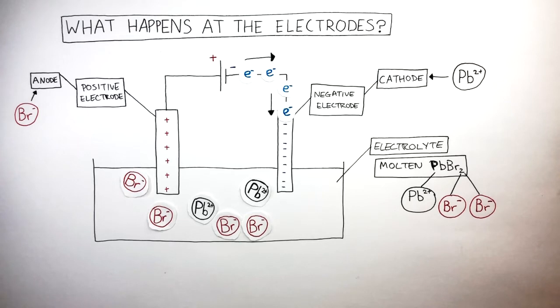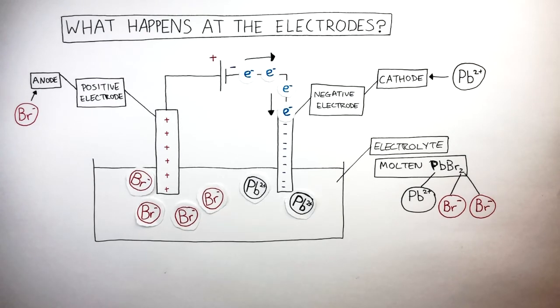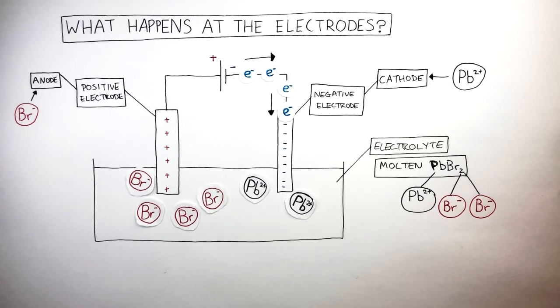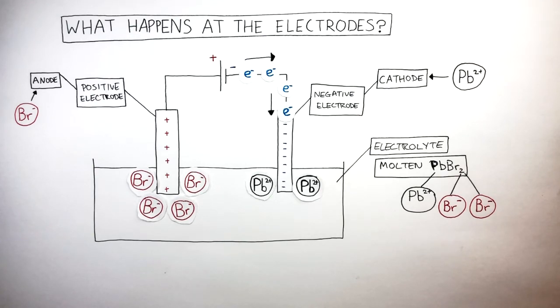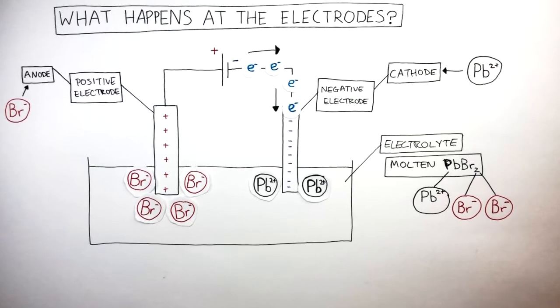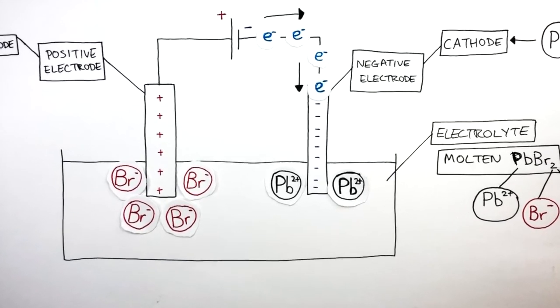Therefore the positive lead cations are attracted to the negative cathode and the negative bromide anions are attracted to the anode. We can very clearly see how the lead and bromide ions have been separated.